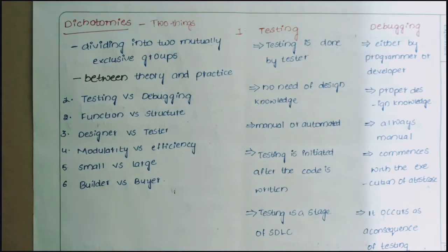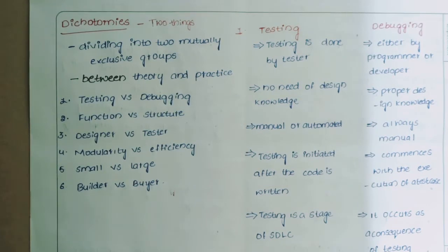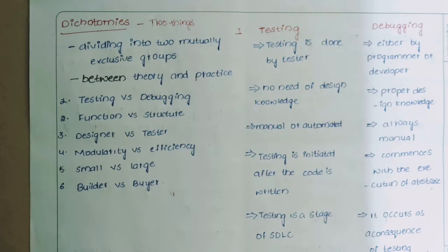Testing is a stage of the Software Development Life Cycle — it is one of the phases in SDLC. Debugging, however, is not one of the phases of the Software Development Life Cycle; it occurs as a consequence of testing.